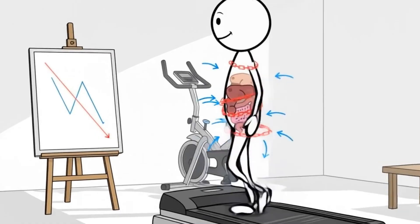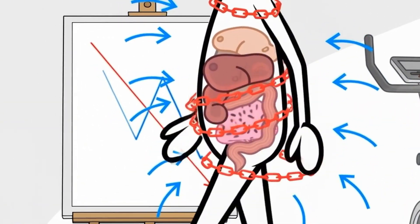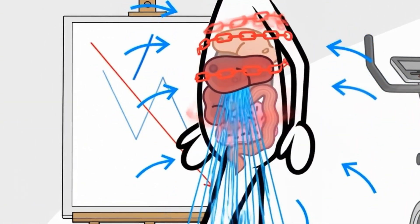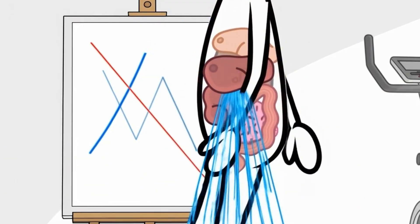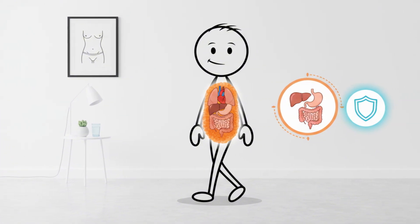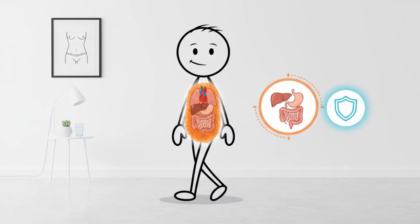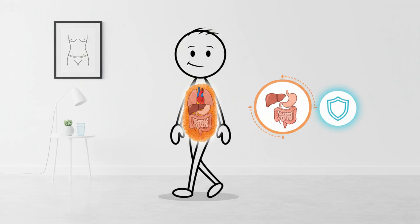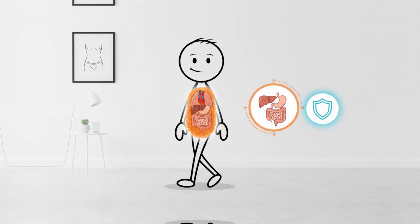Another important piece, insulin sensitivity improves. Visceral fat is strongly tied to insulin resistance, and research shows that moderate aerobic exercise is one of the fastest ways to enhance glucose uptake in muscle cells. Better insulin sensitivity means less fat stored around your organs.